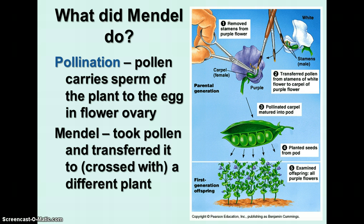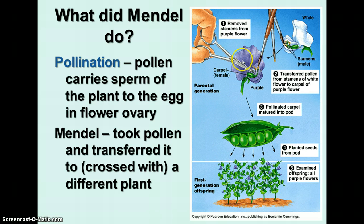He transferred pollen from the stamens of the white flower plant to the ovary or the carpel of the purple flower. The pollen carries the sperm gametes, and the egg gametes are found in the carpel or the pistil of the flower — that's where the seeds are going to be produced. By transferring the pollen from one flower to the other, he was able to cross the two different parent stalks. The pollinated carpel matured into a pea pod, and he planted the seeds and examined all the offspring. When he crossed the purple flower with the white flower, all of the first-generation offspring had purple flowers.